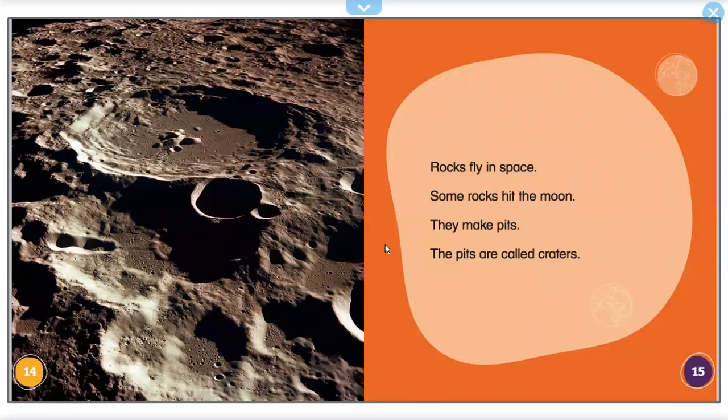Rocks fly in space. Some rocks hit the moon. They make pits. The pits are called craters.